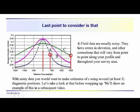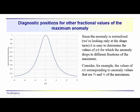You may want to use, and you will want to use, with noisy data, you'll want to make estimates of z using probably at least three diagnostic positions. So yes, there are more than just x_1/2. There's x_3/4, there's x_1/4, there's x_2/3. They all should give you the same value of z. So if we take a look at the diagnostic positions for other fractional values. Now I've just plotted up a normalized noise-free anomaly here, and it's normalized. I've just divided both sides by g_max, so this is just the shape term.